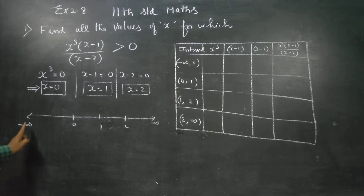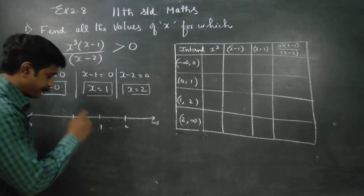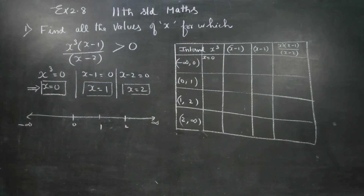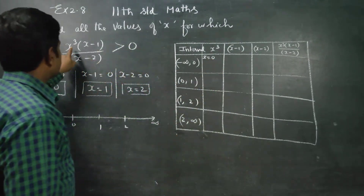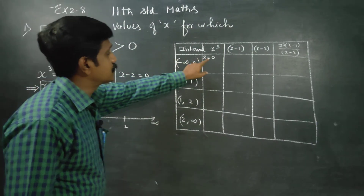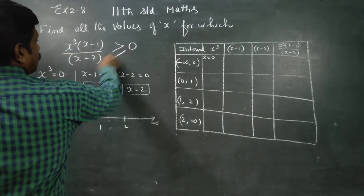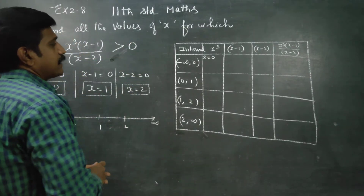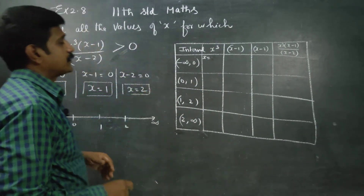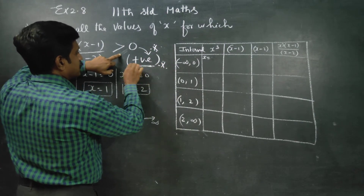Here on the real number line, the first interval is minus infinity to 0. I will ask you to pick a test point. Note that at x equal to 0 the expression equals 0, and we need greater than 0, so equal to 0 is not acceptable. I want only positive values — greater than 0 means only positive.